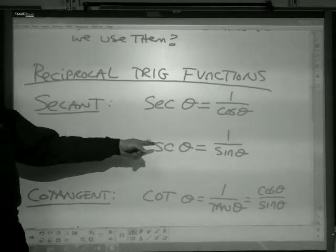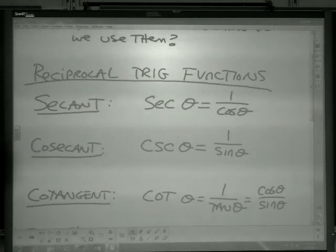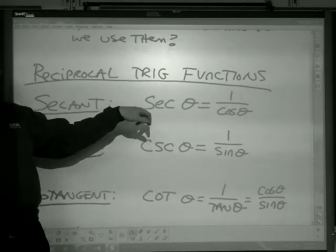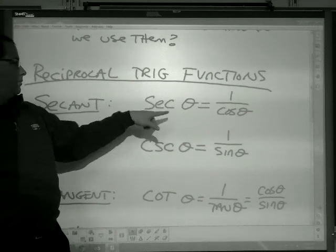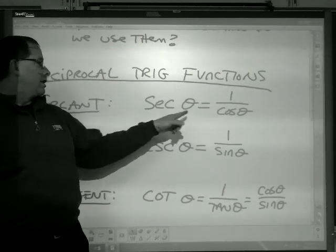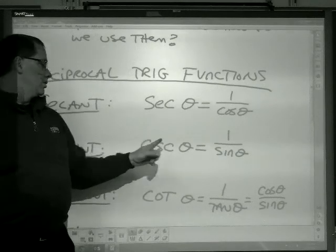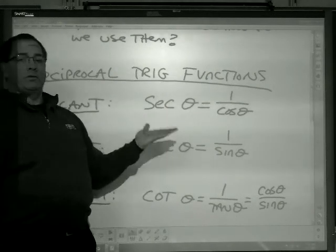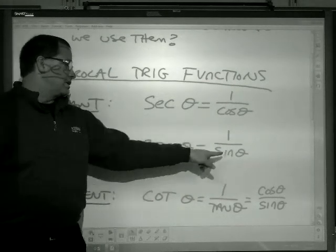Cosecant, which is CSC, is the flip of the sine. The only way I remember it is when I take the reciprocal, I've got to make sure that secant, the flip, it won't have the same first letter. That's how I remember it. Secant, 1 over cos. Cosecant, 1 over sine. I know it sounds like cosecant should be 1 over cos, but it's not. It's a reciprocal trig function, so these letters can never match.